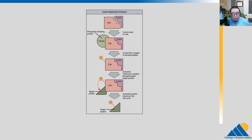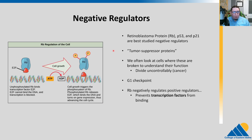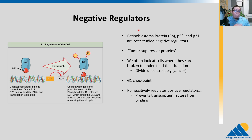There are also regulators of the regulators — things that can inhibit the CDKs as well. Negative regulators prevent the cell cycle from occurring. Many of these are called tumor suppressor proteins. We have a few very well studied: retinoblastoma protein (RB), P53, and P21. They're called tumor suppressors because when they're present, they prevent cell division, which could prevent improper cell division leading to tumors. When they break, that could lead to tumors.